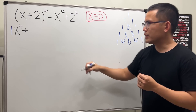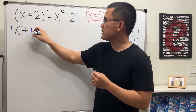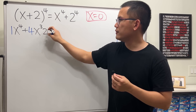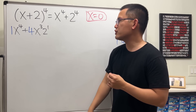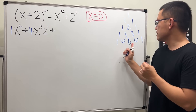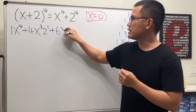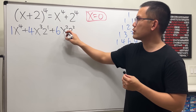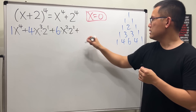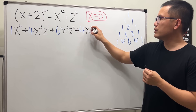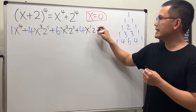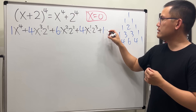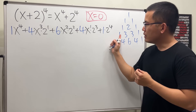The next coefficient is 4, and the power of x goes down by one while we introduce 2 to the first power. Continuing: plus 6 times x squared times 2 squared, then plus 4 times x to the first times 2 to the third, and finally 1 times x to the zero times 2 to the fourth power.